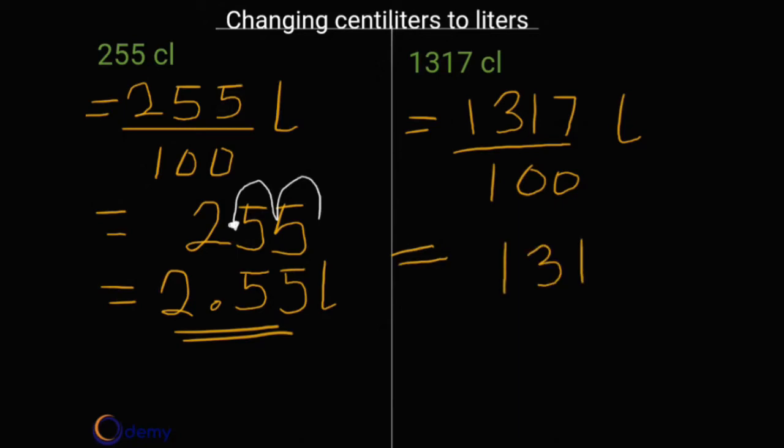How many zeros can you find? We have two zeros. So what do we do now? We move it two times backwards starting from here: one, two. So this is where our point is going to be. So our answer then gives us 13.17 liters. Can you see this?